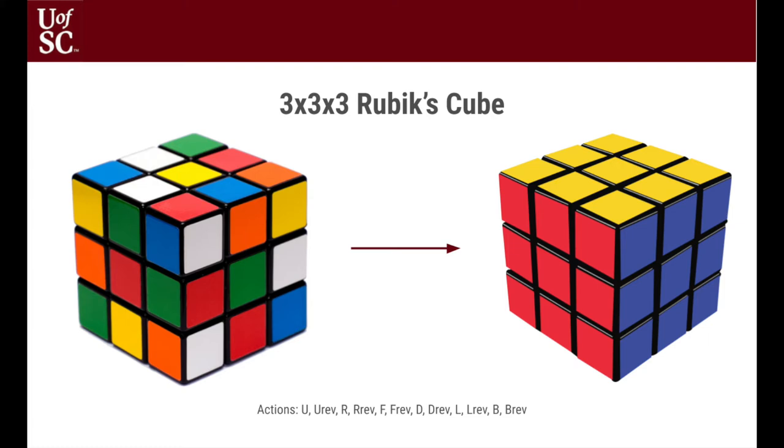Now let us have a quick refresher on the Rubik's Cube. Each 3x3x3 Rubik's Cube has three horizontal layers: top layer, middle layer, and bottom layer.